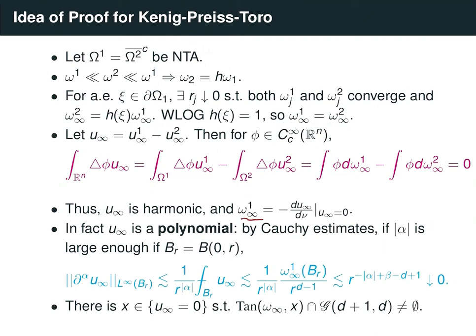Recall that omega_infinity^1 equals minus the normal derivative of u_infinity along the zero set of u_infinity. It can be shown that for a harmonic polynomial, its zero set is a rectifiable set. In particular, that means omega_infinity^1 is a rectifiable measure — absolutely continuous with respect to Hausdorff measure — and we know its density with respect to Hausdorff measure. Its support is also a rectifiable set.